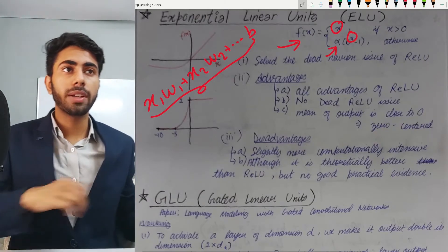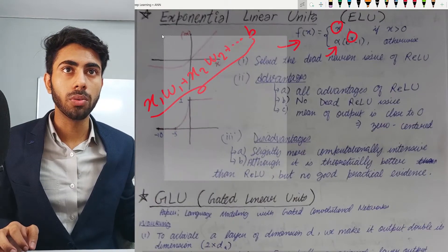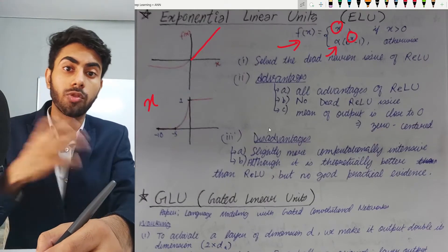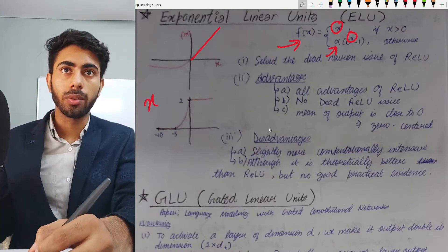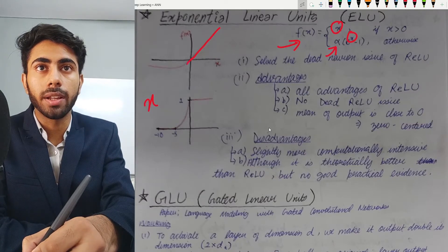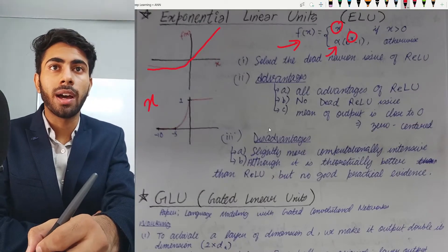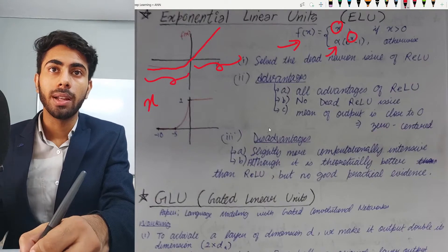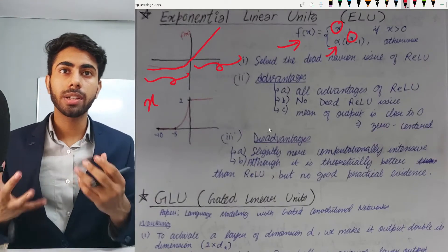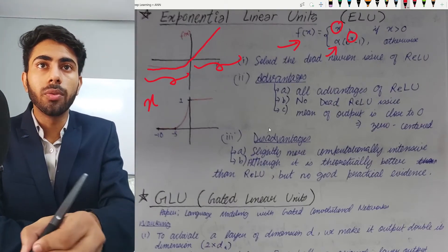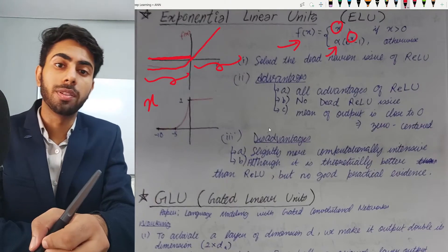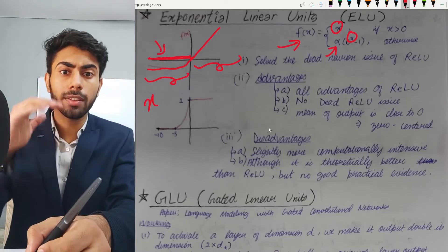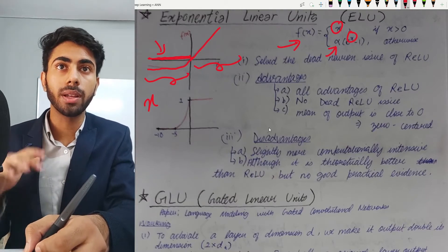Looking at the graph of ELU, for positive inputs you get a straight line y equals x. For negative values you get a curve sloping downward. The key advantage here compared to a normal ReLU — where the slope is zero for negative inputs causing the dying ReLU problem — is that ELU produces some output in the negative region, giving a non-zero slope, which helps solve the dying ReLU problem.